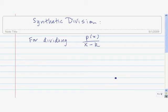Okay, let's talk about synthetic division. Synthetic division is a shortcut for dividing something that looks like this. So we have a polynomial P of x divided by x minus some number. Let's do an example.